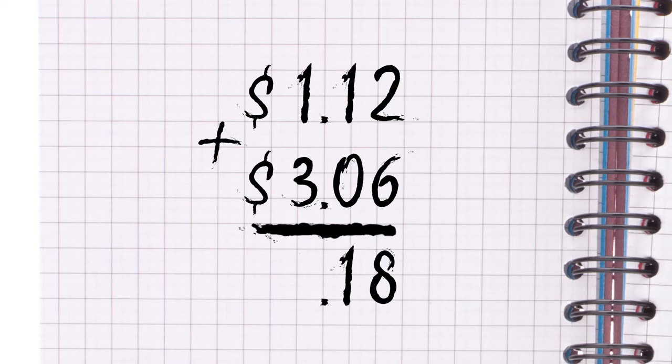Next, we need to place the decimal point underneath the decimal points above it. Decimals separate numbers. In money word problems, the numbers on the right side of the decimal are the change amount. And the numbers on the left side of the decimal are the dollar amount.